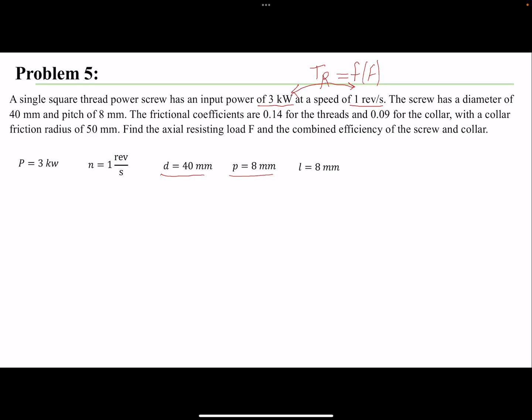The mean diameter would be the major diameter minus half of pitch. If you remember the geometry of a square thread, if this is the major diameter, then the mean diameter would be somewhere here.